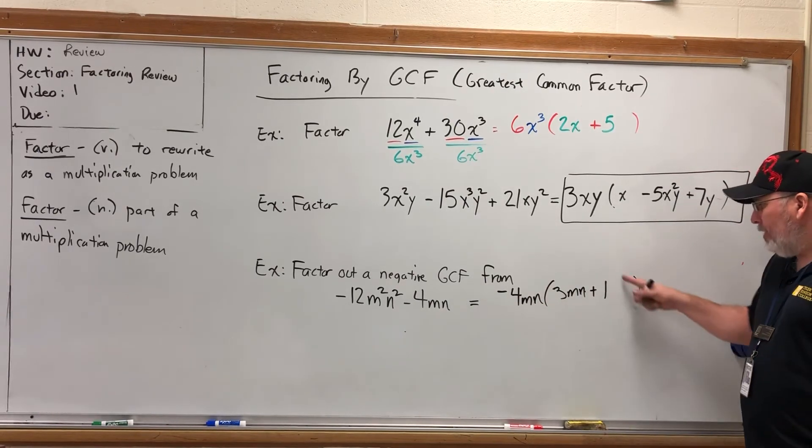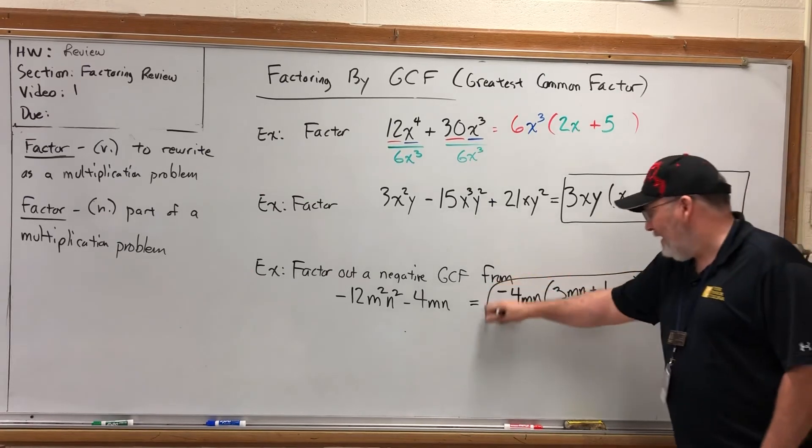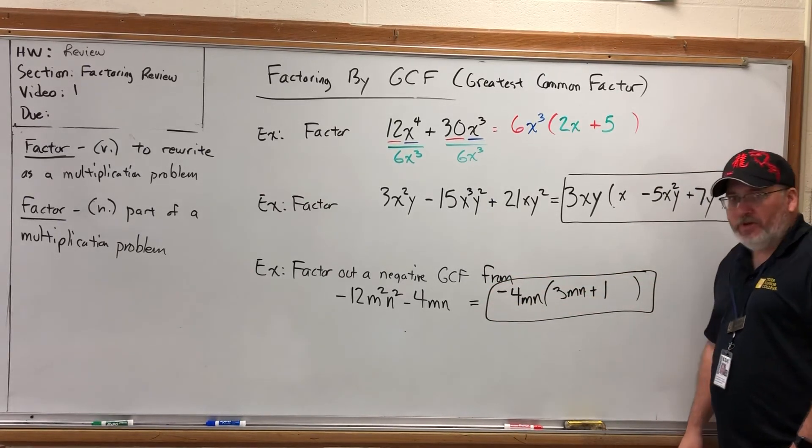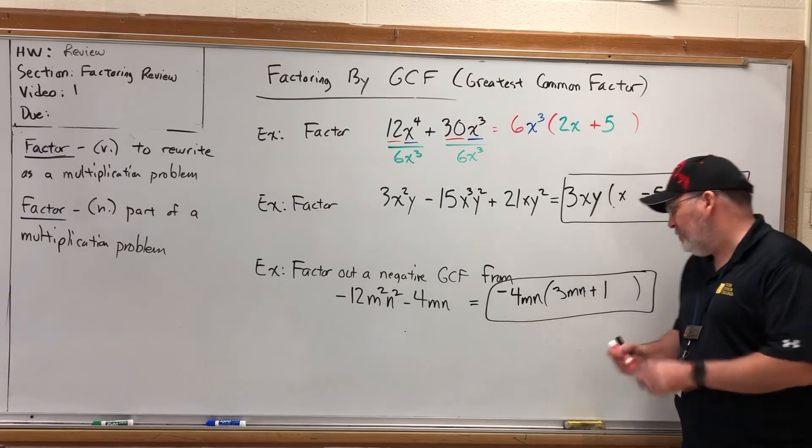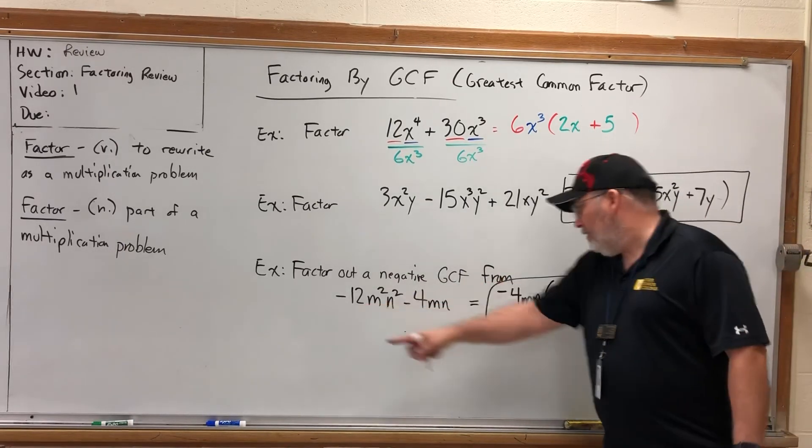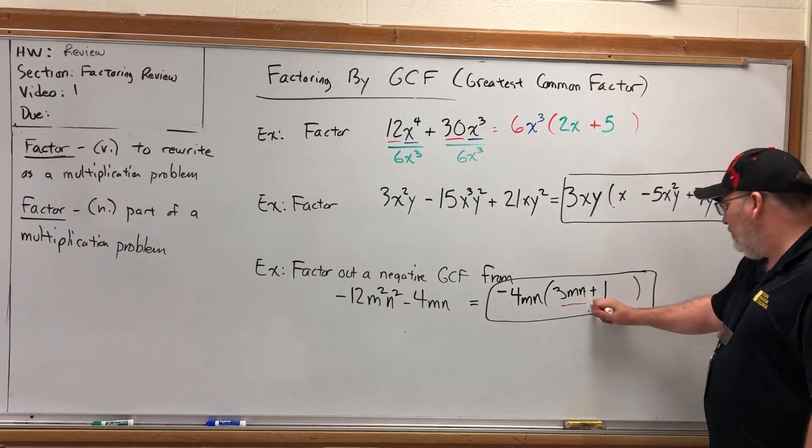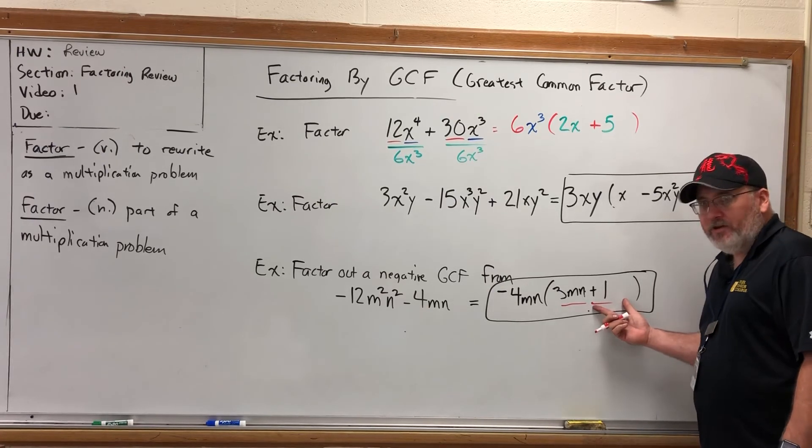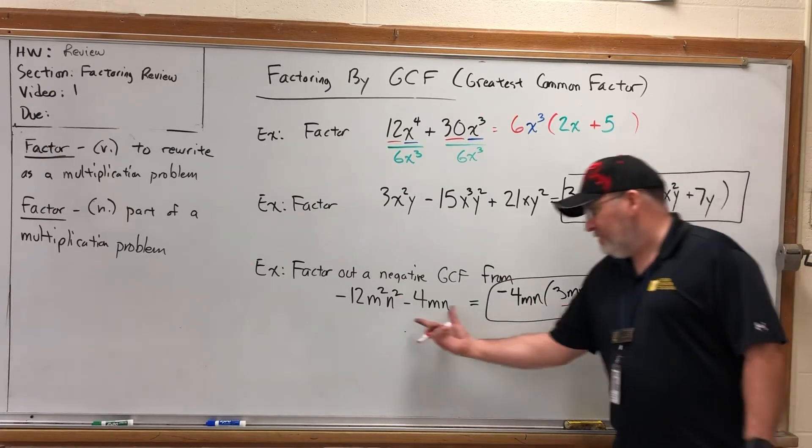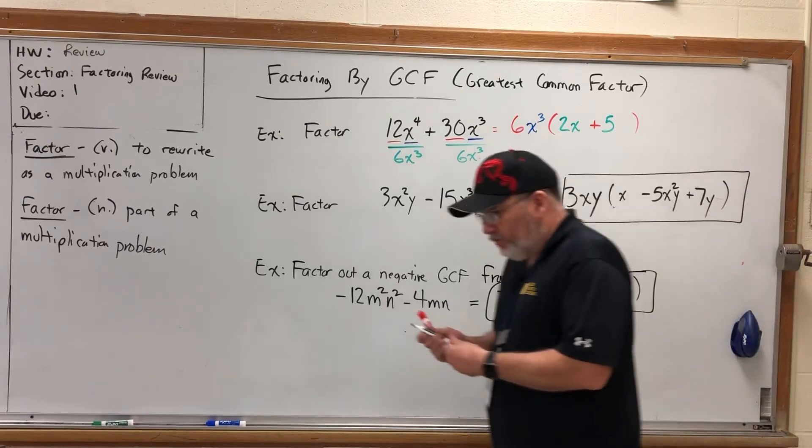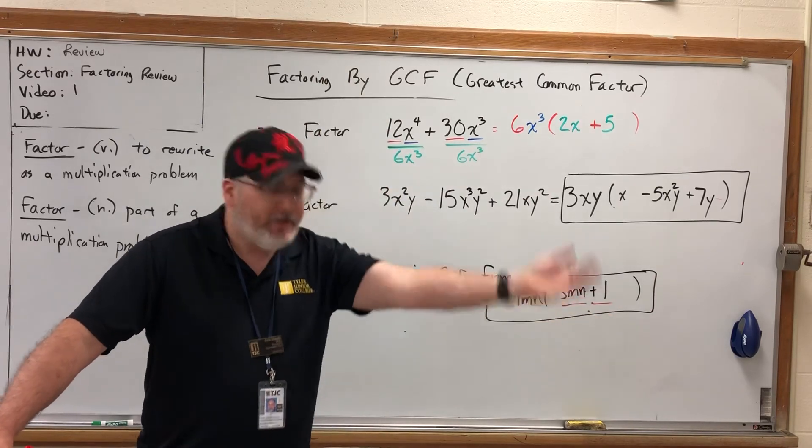And by the way, you can check any GCF problem by redistributing. I think this one would be a good idea since we were factoring out a negative. If I were to distribute to the first term, negative 4 times 3 is 12. m times m is m squared. n times n is n squared. So the first term checks out. And the second one is easy. I'm multiplying by positive 1. Multiplying by positive 1 doesn't change anything. So negative 4mn times positive 1 is still negative 4mn. So GCF is really just doing the distributive property backwards. You just have to look for evidence of what was the greatest amount that could have been distributed, and then take it back.